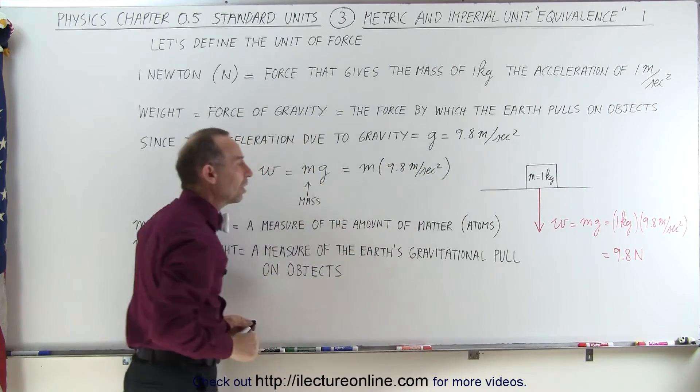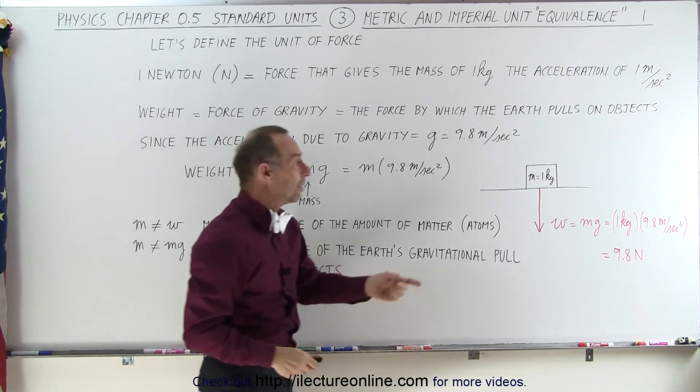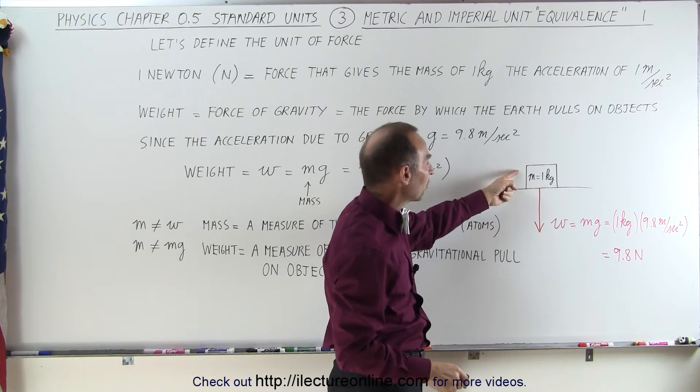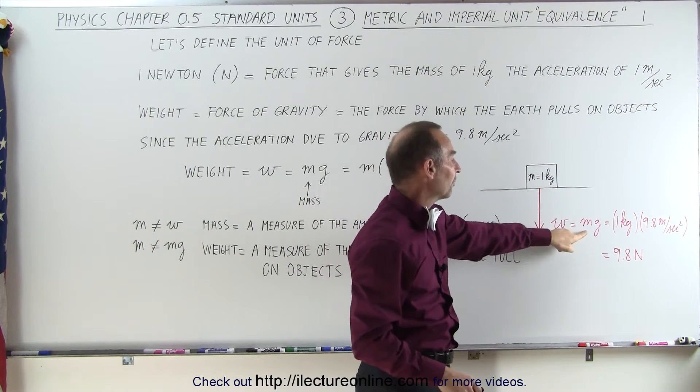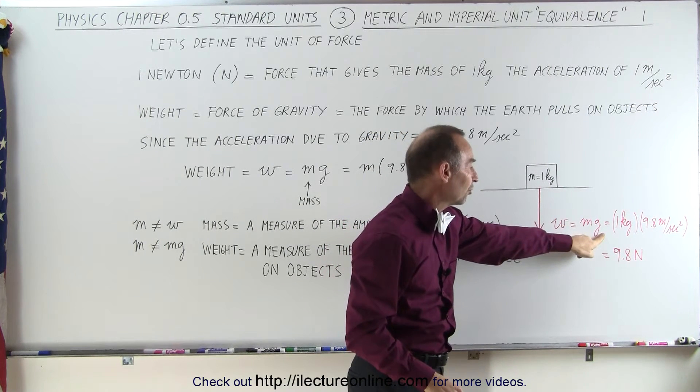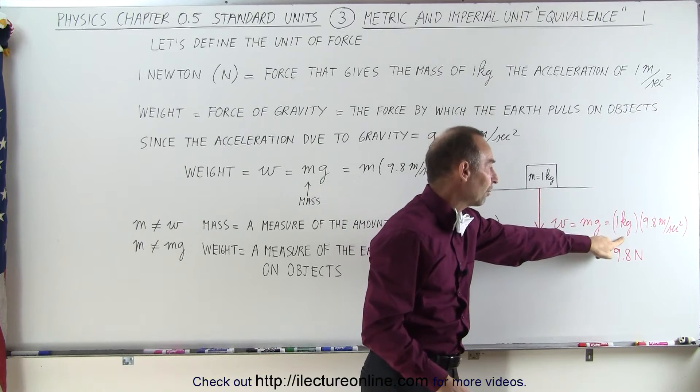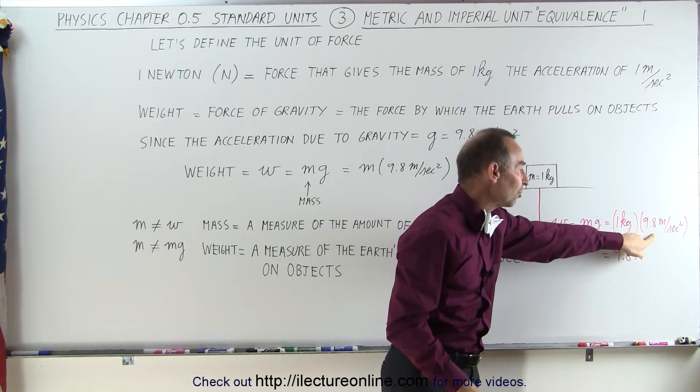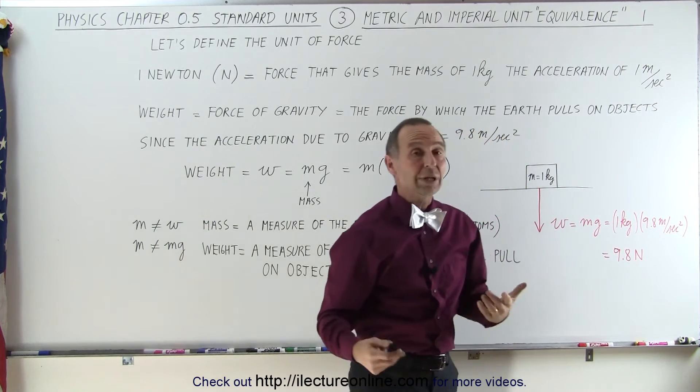As an example, if we have an object with a mass of 1 kg, the weight is the product of its mass and the acceleration due to gravity. So 1 kg times 9.8 meters per second squared equals 9.8 N.